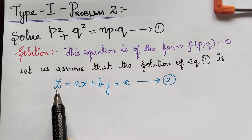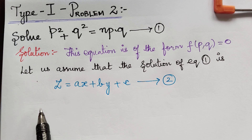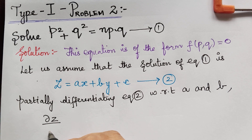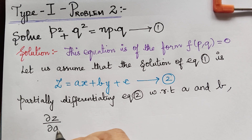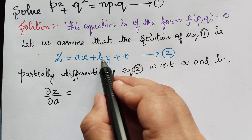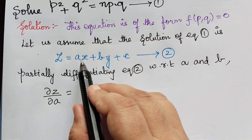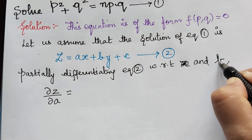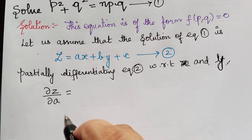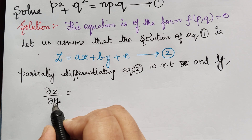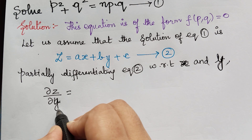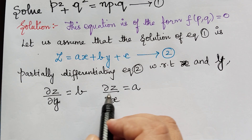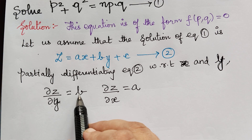The next step is we have to partially differentiate z with respect to x and y. When partially differentiated with respect to y we get b, and partially differentiating with respect to x we get a. So therefore the value of p is equal to a and the value of q is equal to b.